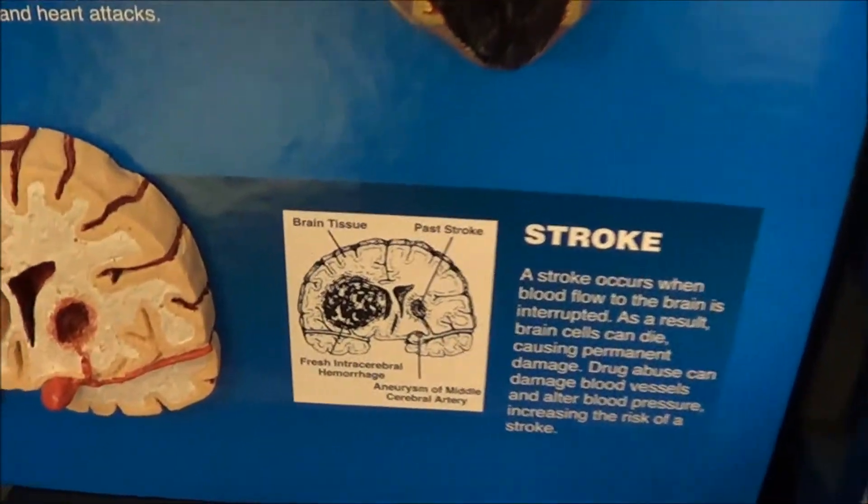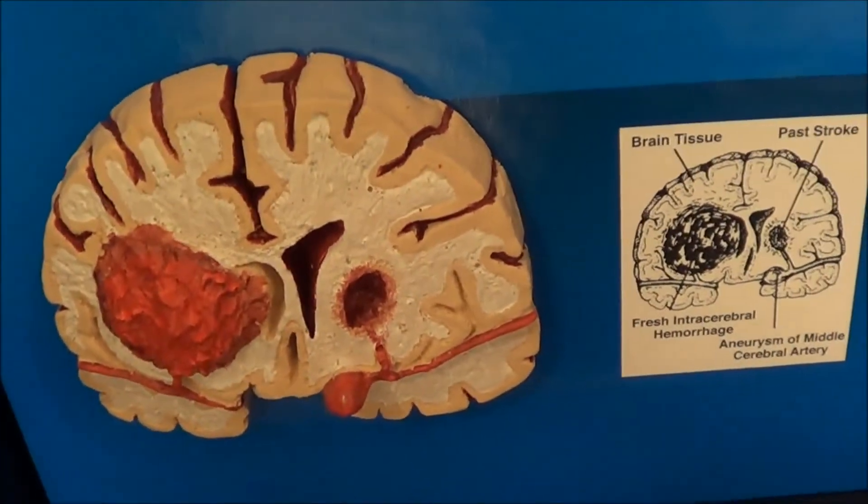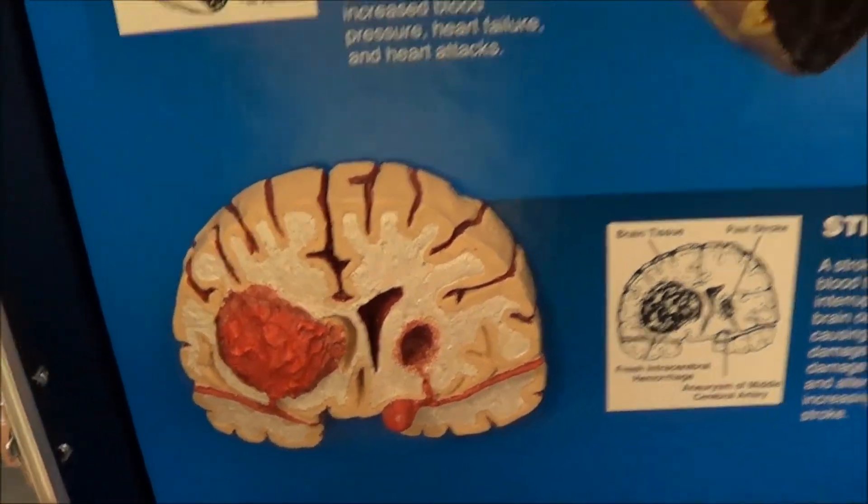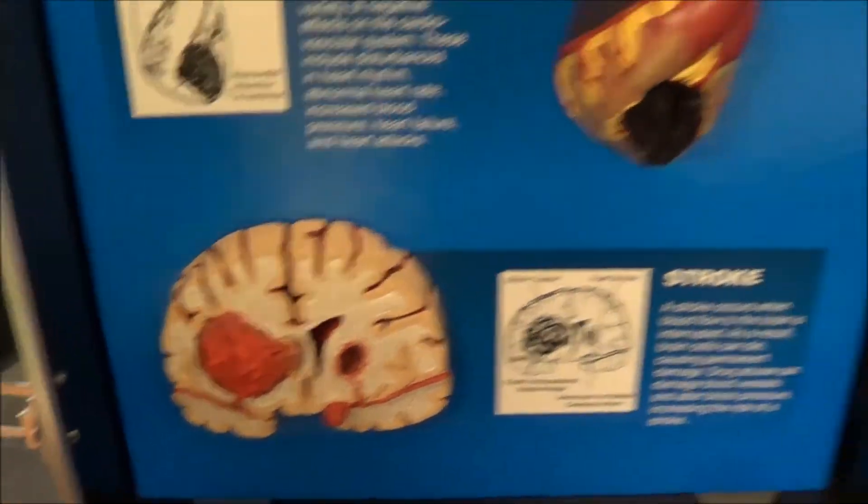A stroke occurs when blood flow to the brain is interrupted as a result. Brain cells can die.